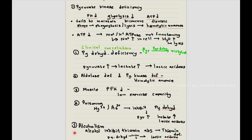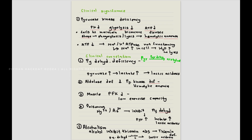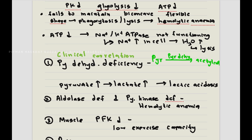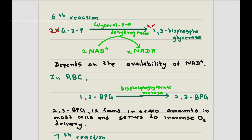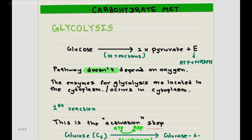In alcoholism, excessive alcohol consumption inhibits the absorption of thiamine, causing thiamine deficiency. Thiamine is an important cofactor of pyruvate dehydrogenase, so when this cofactor is reduced, pyruvate accumulates further, lactate accumulates, and lactic acidosis occurs. So that is my lesson on glycolysis — I hope you guys understood it well. If there are any questions, please comment down below and I will try to answer them. Thank you so much for joining and have a nice day.